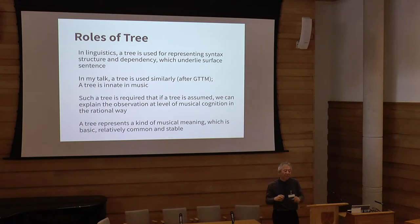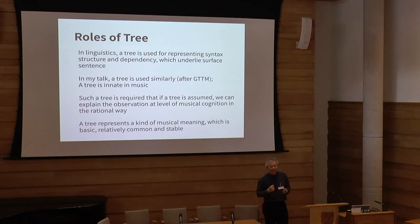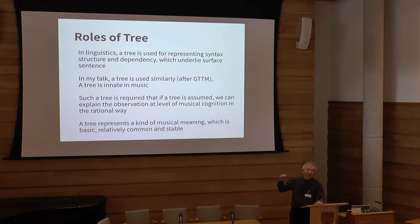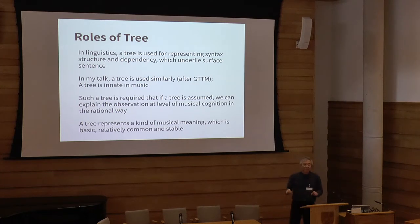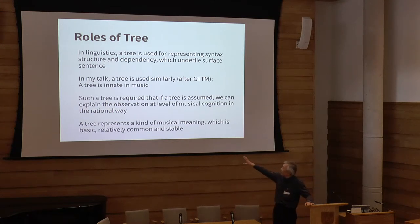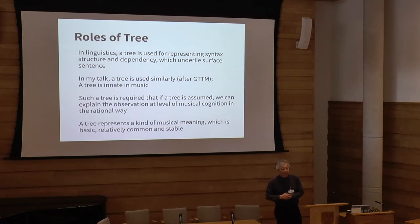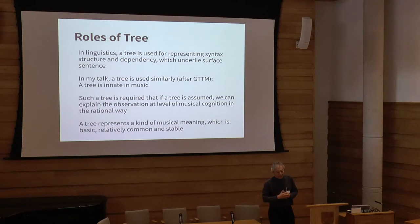They introduce a tree structure as a kind of representation of meaning — this is very important. I agree with them that the tree structure introduces many things. A tree is innate in music, which may be a significant point in terms of the semantics of music from a GTTM point of view. A tree represents a kind of musical meaning, which is basically relatively common and stable. The time-span tree and the prolongation tree are a good starting point for discussing musical meaning.